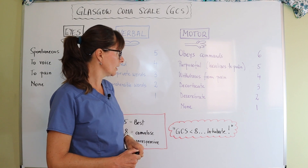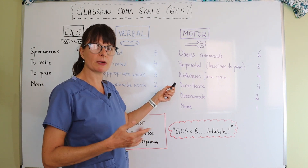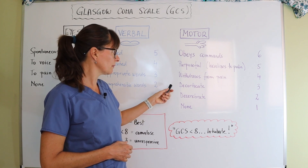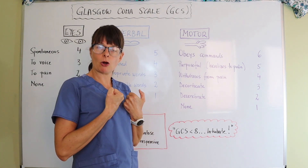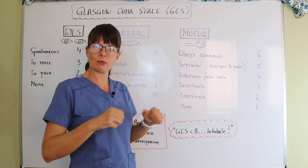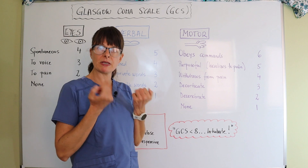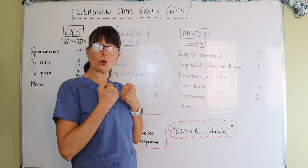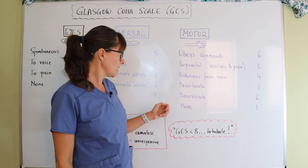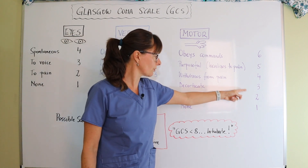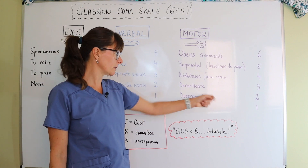Then we have posturing, which is usually a significant sign, meaning there is probably some pretty significant brain injury going on. Decorticate posturing is an involuntary response where the patient's hands and arms come towards the core — that's how I remember decorticate, 'to the core' — which gives them a score of three. Decerebrate posturing gives them a score of two, and that means the posturing has moved further down. Decerebrate is worse than decorticate. And if there is no motor response at all, the patient gets a score of one.